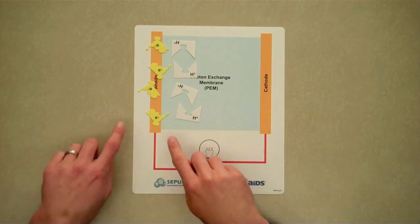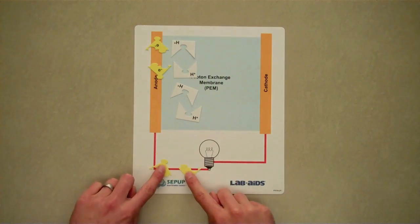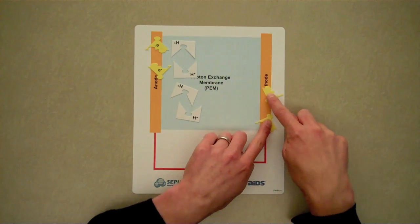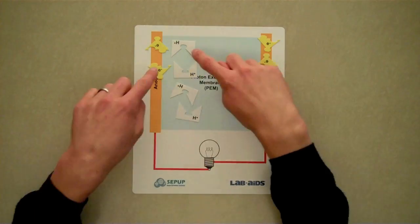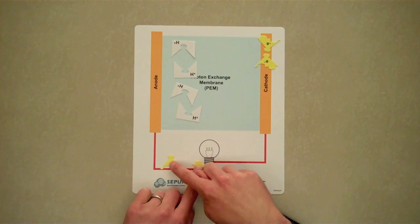The electrons, in yellow, travel through the electrical circuit and the light bulb to the cathode. Notice that the light bulb does not consume or use up the electrons. They just pass through it.